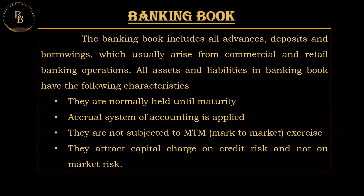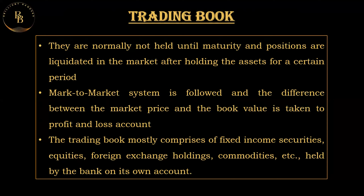The trading book includes all assets that are marketable — that is, they can be traded in the market. Contrary to the banking book, trading book assets are normally not held until maturity; positions are liquidated in the market after holding them for a certain period. The mark-to-market system is followed, and the difference between market price and book value is taken to the profit and loss account. The trading book mostly comprises fixed income securities, equities, and foreign exchange holdings.